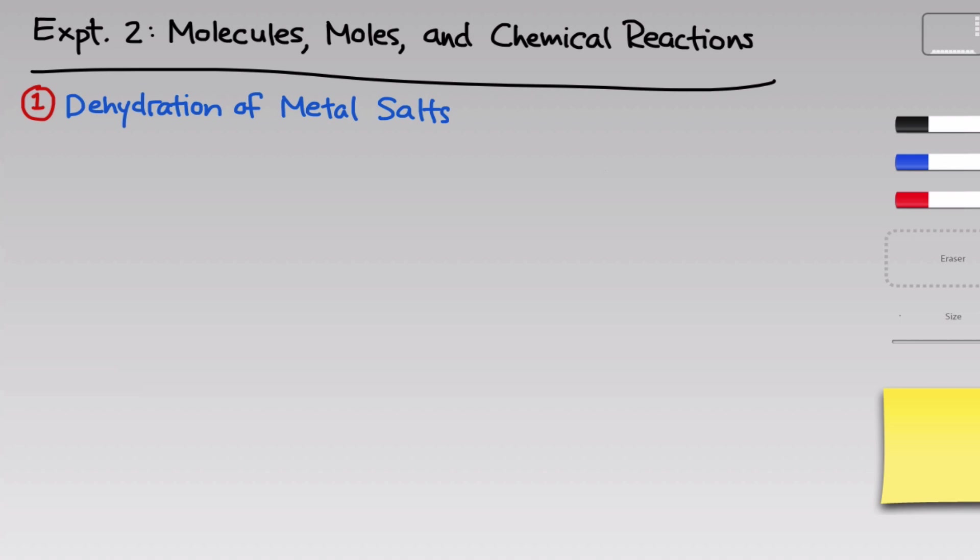In the first part of this experiment, we'll apply a dehydration reaction to identify an unknown metal salt. Your lab manual lists four different possibilities. We can write a general formula MX, where M is a metal and X is the counter anion, dot YH2O, which means there are Y waters of hydration in the crystal structure of this metal salt.